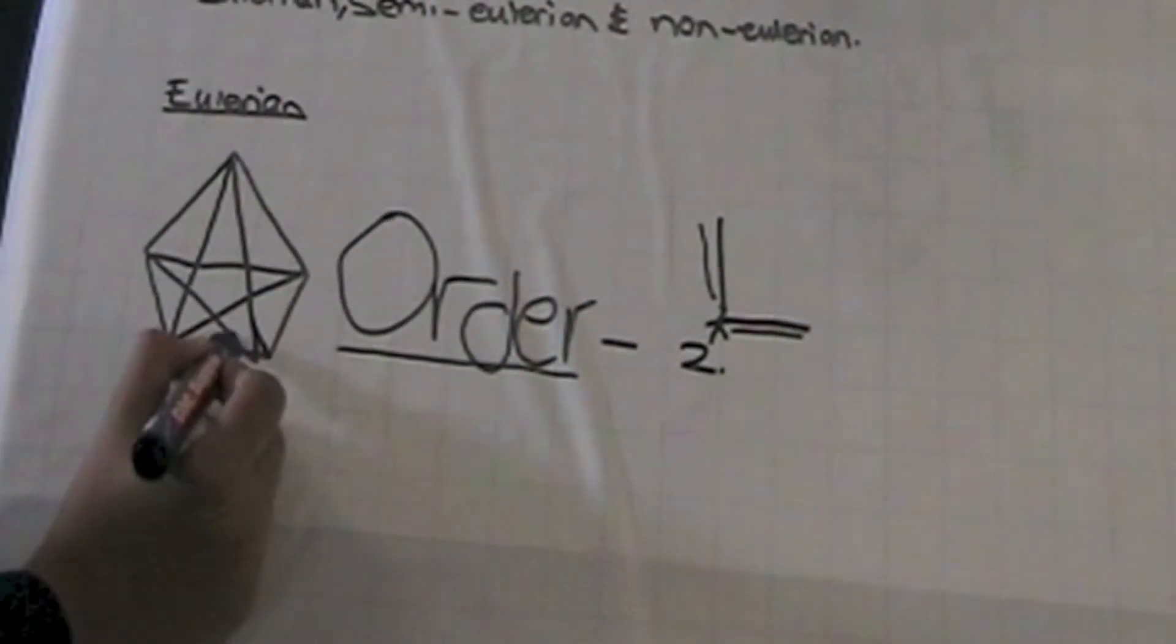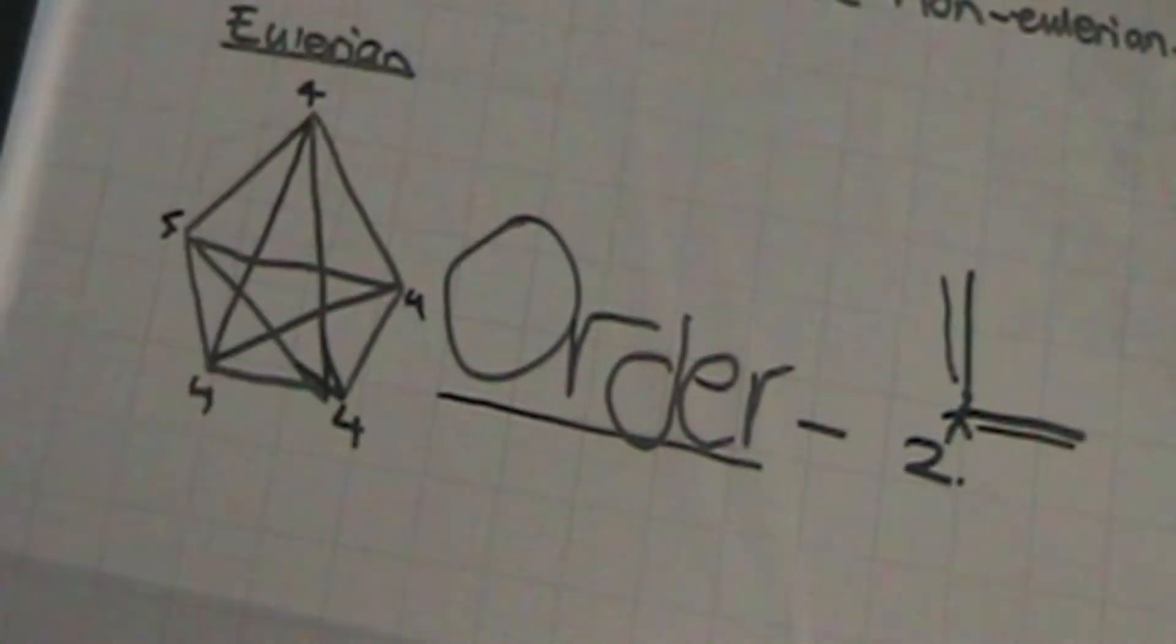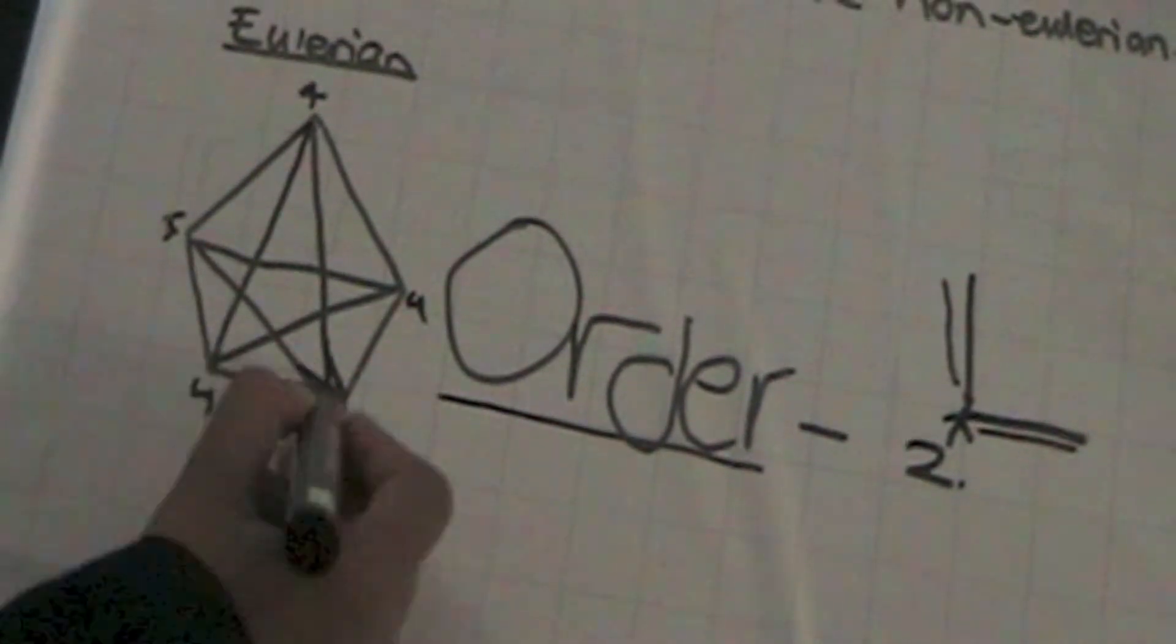Looking at a graph, this vertex has order four. This vertex also has four. In fact, all of them have four. Because all the vertices have even order, the graph is Eulerian.